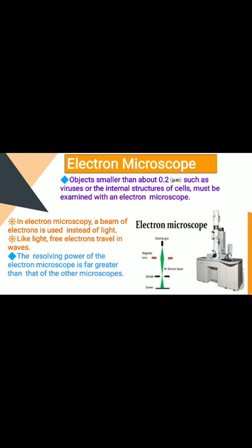In electron microscopy, objects smaller than about 0.2 micrometers — such as viruses or the internal structure of cells — must be examined with an electron microscope. In electron microscopy, a beam of electrons is used instead of light. Like light, free electrons travel in waves, so the resolving power of the electron microscope is far greater than that of other microscopes.